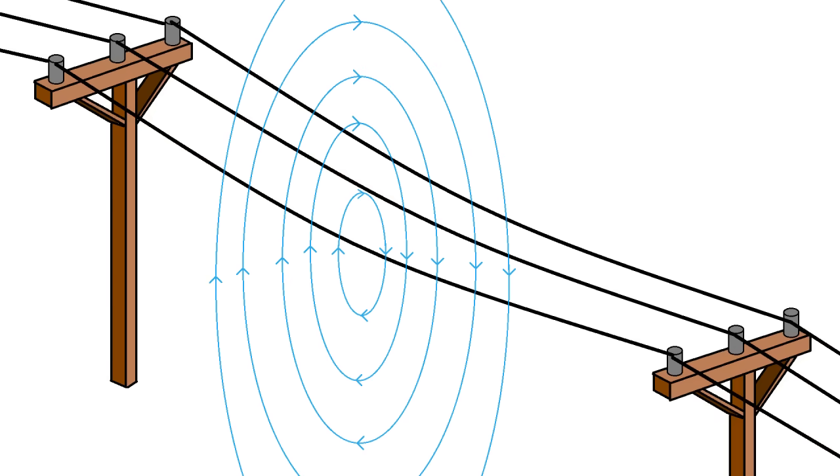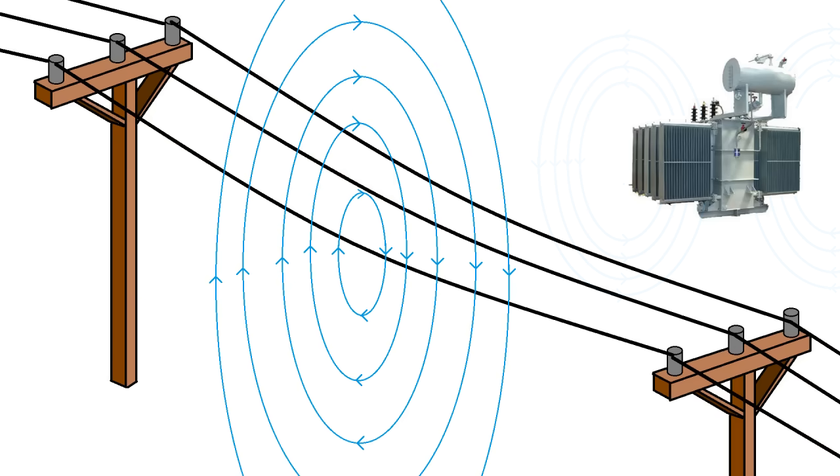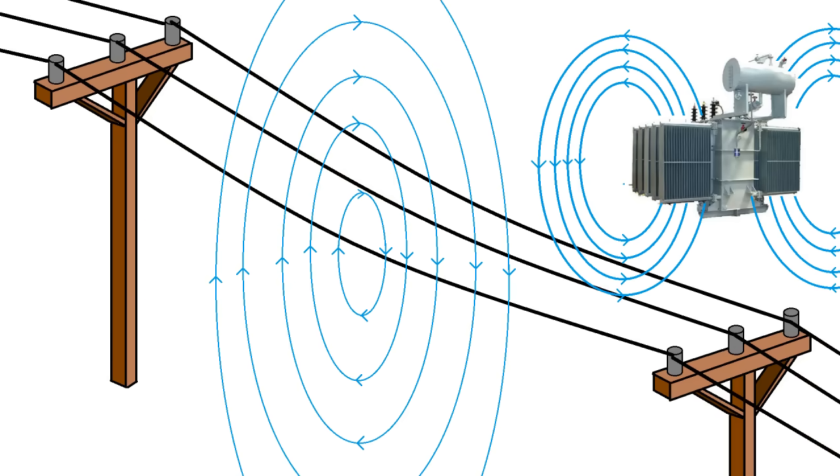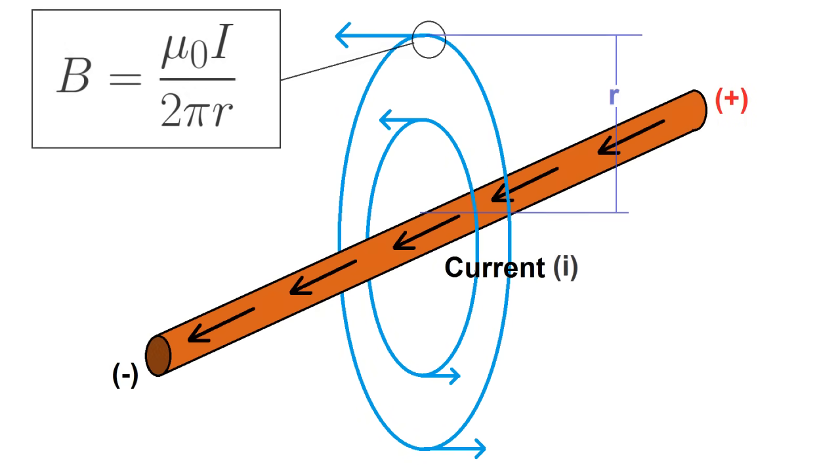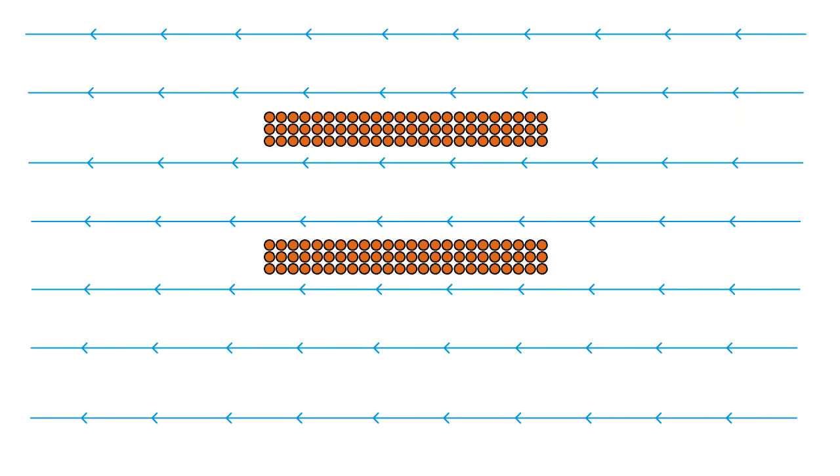The device works by capturing a little bit of the magnetic field projected by power lines and transformers known as leakage flux, which arises from the fact that any electric current flow causes a magnetic field around it. To capture this, a coil of wire is placed in the field. As the alternating current causes the field to change direction, the change in magnetic flux causes the coil to produce a voltage.